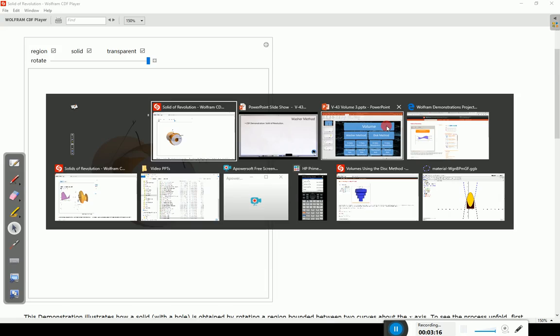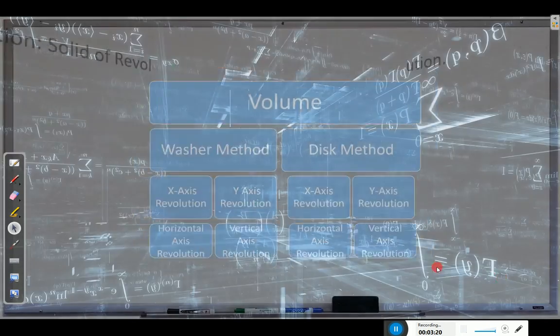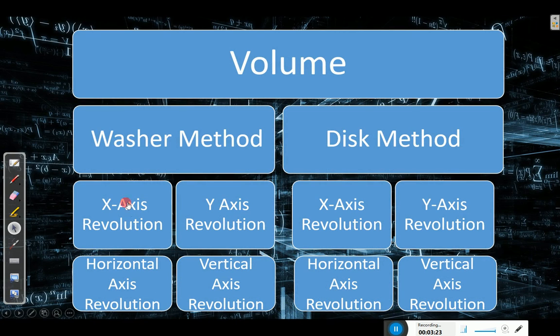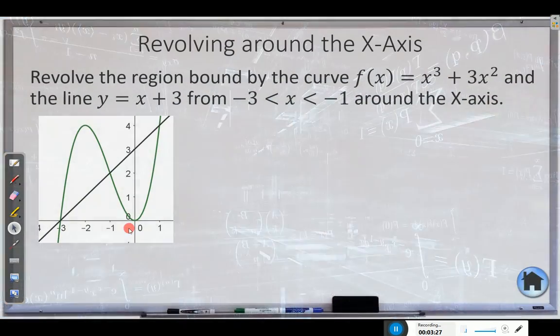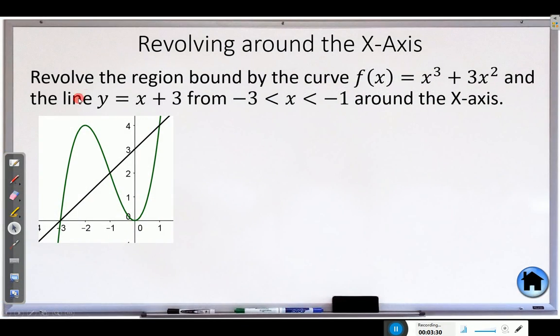So let's see how that works algebraically. So we are going to first start by simply revolving around the x-axis and then we'll move to revolve around a different horizontal axis. So revolve the region bound by the curve x cubed plus 3x squared which is the cubic and the line x plus 3 from negative 3 to negative 1. So it looks like our region from negative 3 to negative 1 will just be this bit right here. So there is our region.